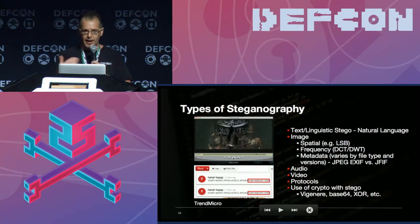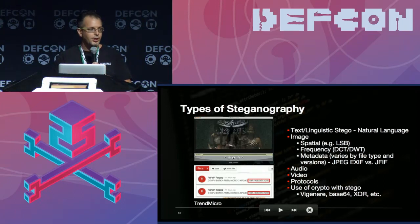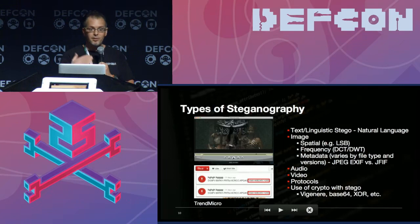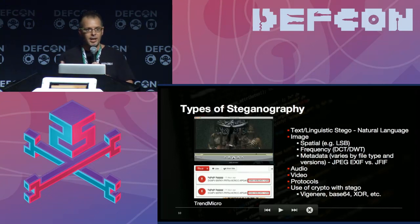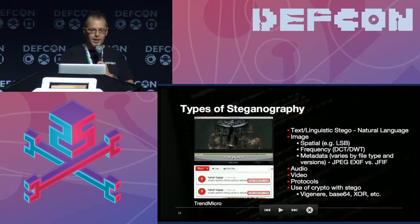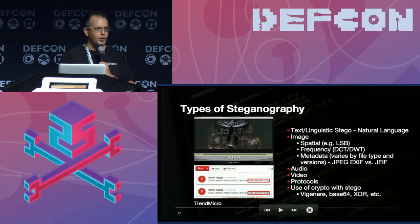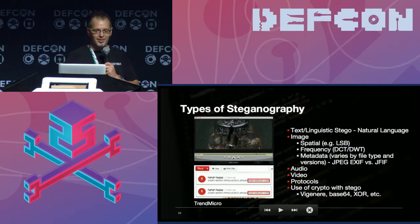I've done lots of research across audio and video. With an MP3, there's typically a JPEG album cover embedded within it. If I can hide stuff in an image, why can't I hide it within that JPEG embedded within the MP3 itself? And many stego programs additionally employ cipher techniques — Vigenère, which was used at Cisco for a long time, XOR, and many other types of crypto.